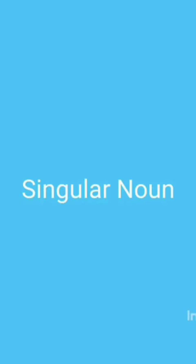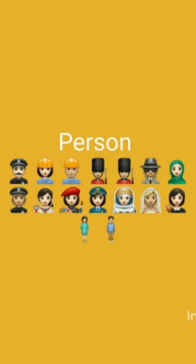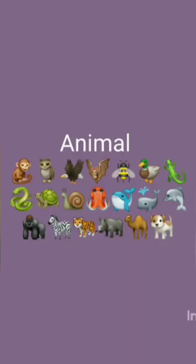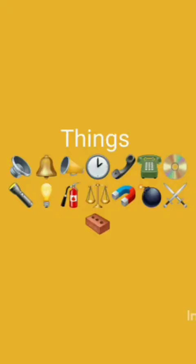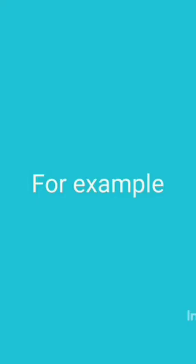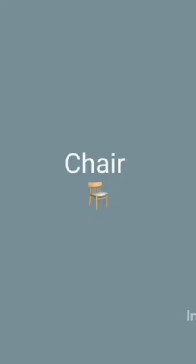What are singular nouns? Nouns that name one person, place, animal, thing, or bird are known as singular nouns. For example, butterfly, girl, chair, etc.